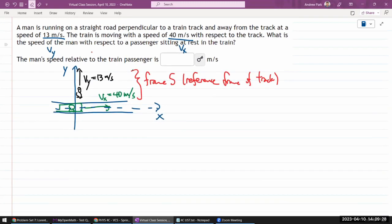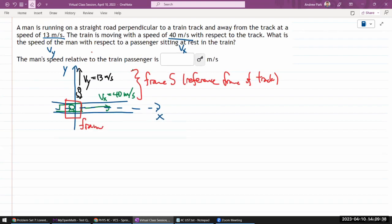And the rest of the question is, what is the speed of the man with respect to a passenger sitting at rest? So the reference frame of the passenger, let me call that frame S prime. And we can express these velocities in this prime coordinate system.